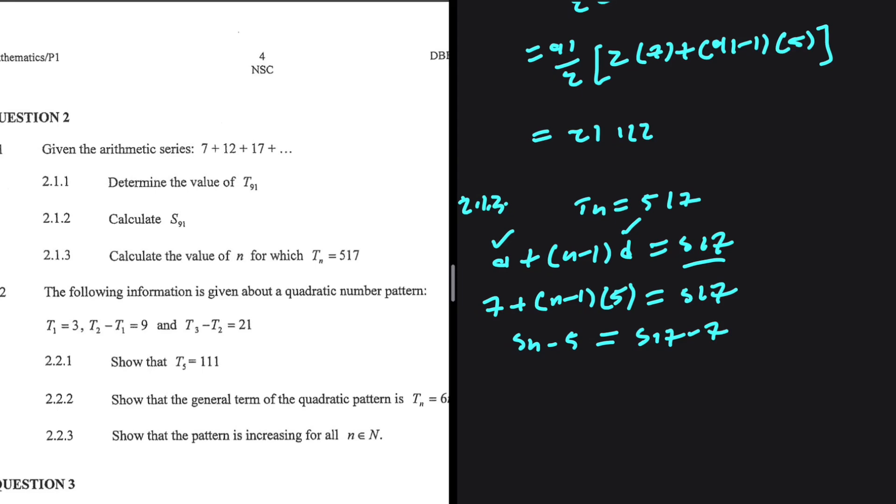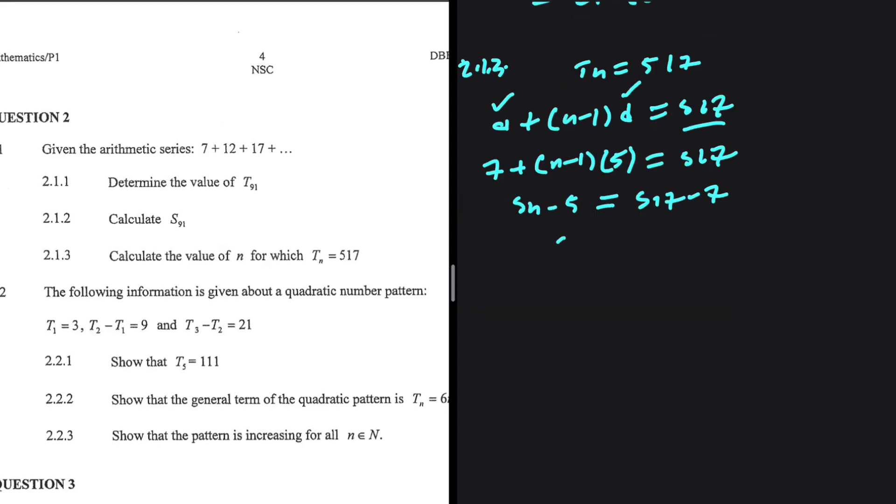So we're going to have 5N minus 5 being equals to 517 minus 7. I'm taking 7 to the right-hand side and multiplying N minus 1 by 5. If we take minus 5 to the right-hand side, we're going to get 5N being equals to 510 plus 5. So 5N equals 515. If we divide both sides by 5, we'll get N equals 103.